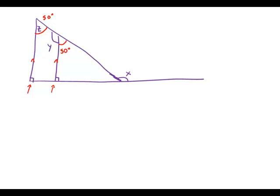So we can find this angle because the three angles in the small triangle have to add up to 180. So that means this has to be a 40 degree angle.